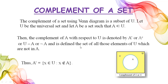We can also write it as U difference A. It is defined as the set of all elements of the universal set which are not in A. This is the same idea as finding the difference of two sets, except the complement means finding the difference from the universal set. In set-builder notation: A complement equals {x belongs to U such that x does not belong to A}.